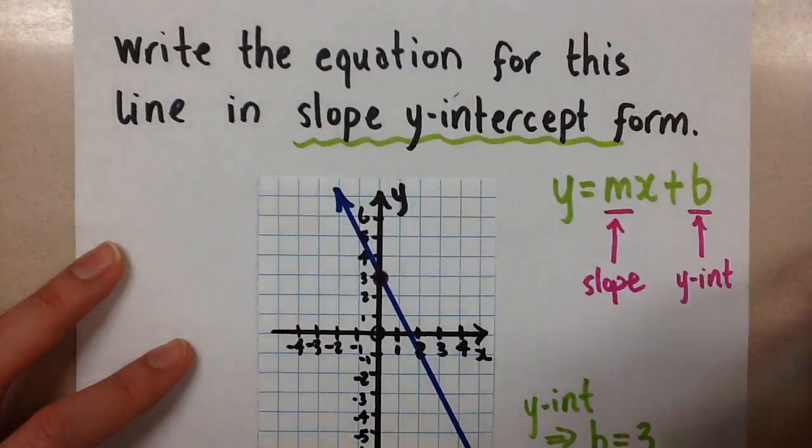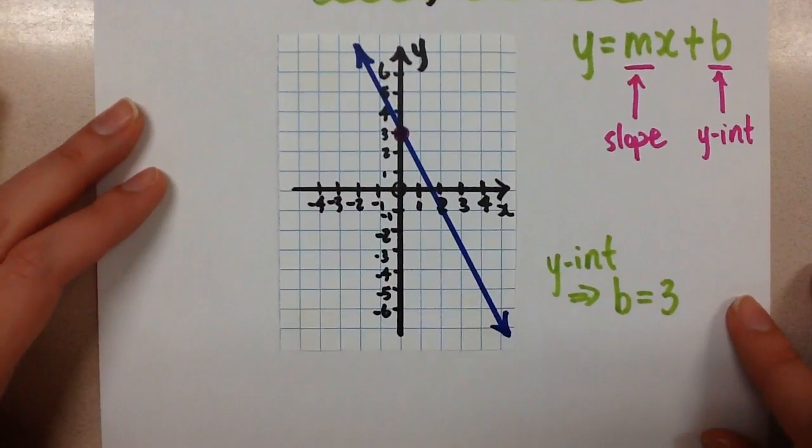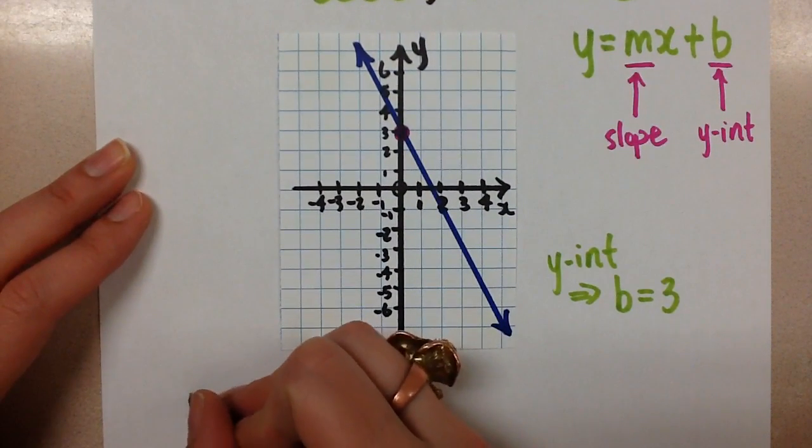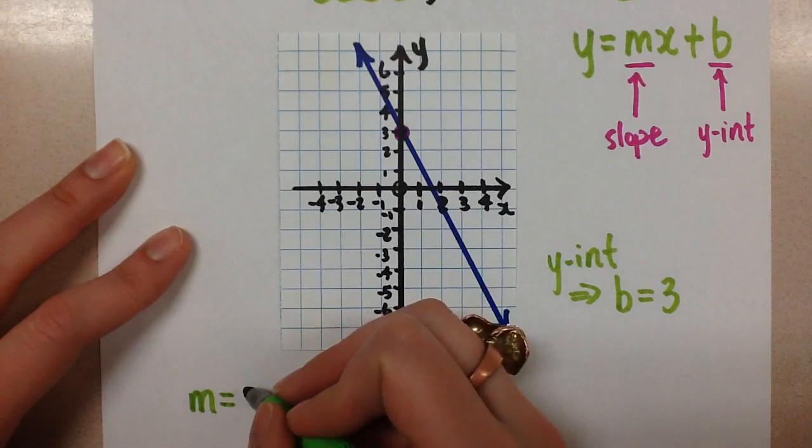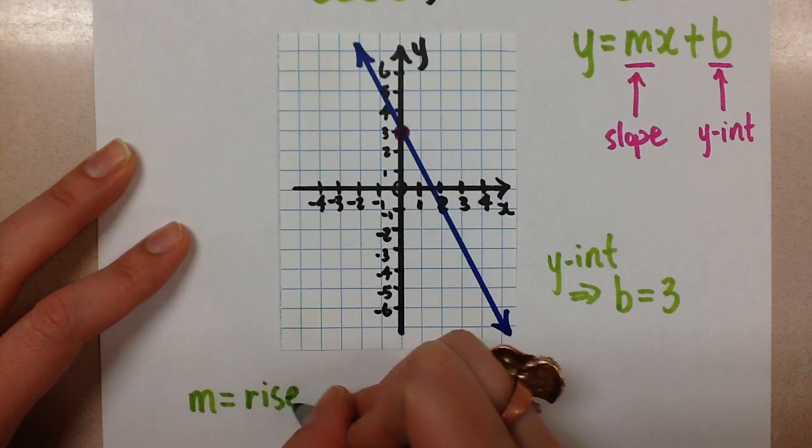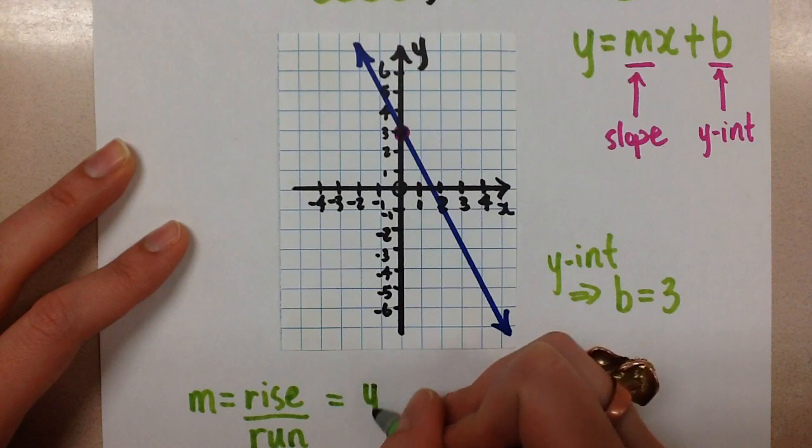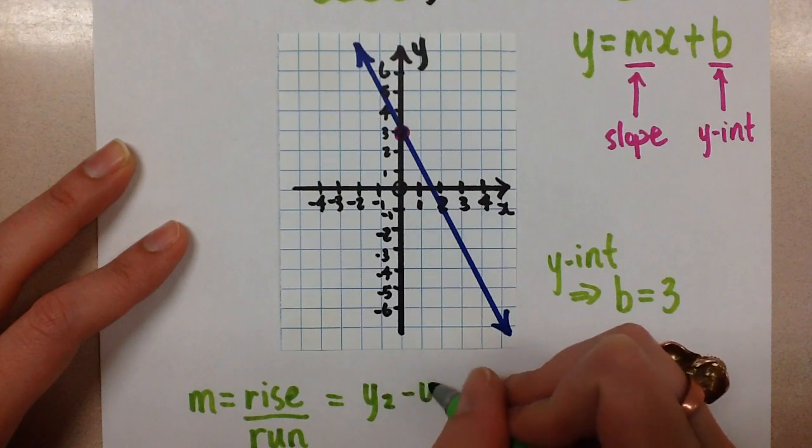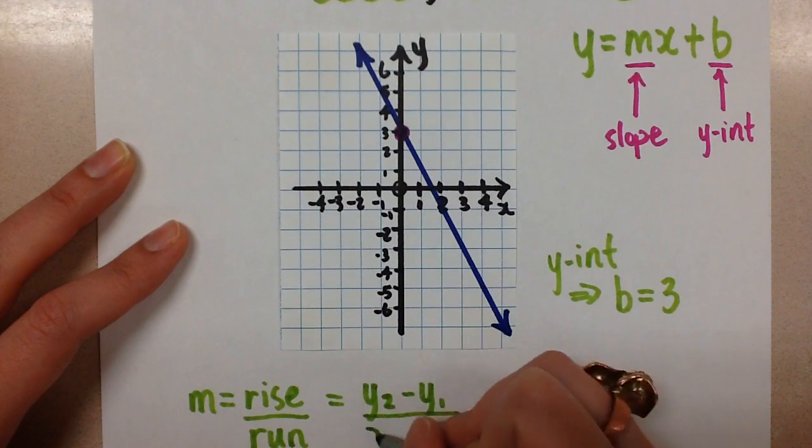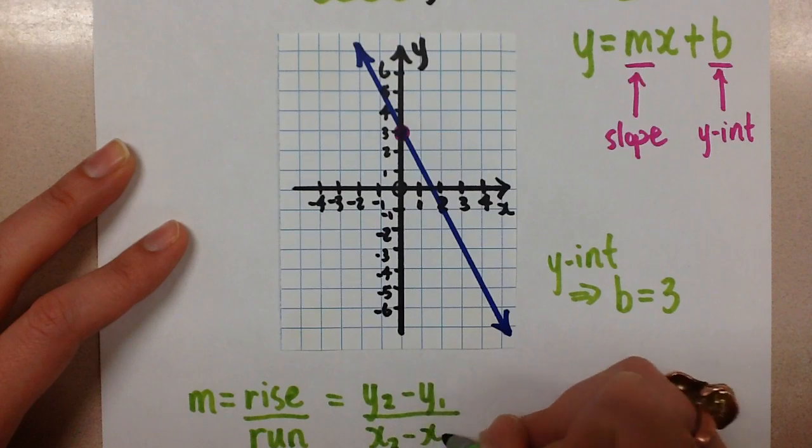So the formula for calculating slope, we have a few. One is slope equals rise over run, and the other common one is y2 minus y1 over x2 minus x1.